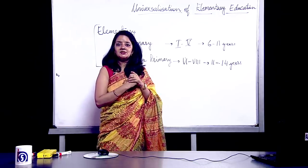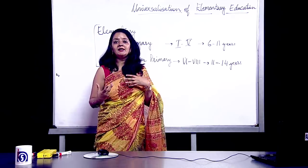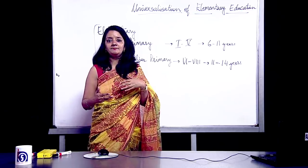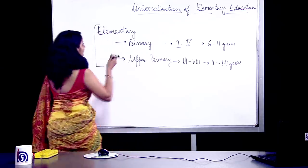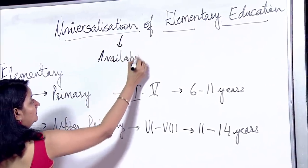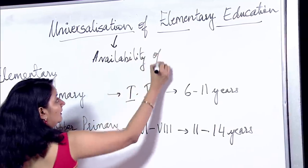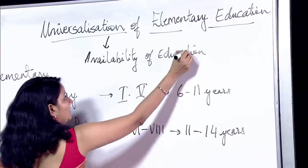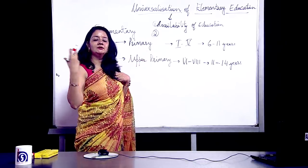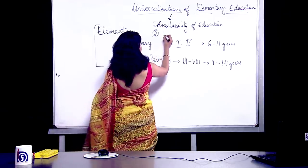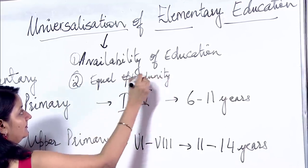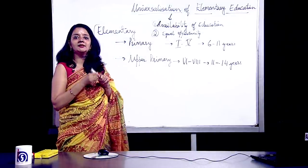The second thing under universalization of education is that it can also be defined as the availability and equal opportunity to everyone so that they can educate themselves. So there are two things under universalization of education: the first one is availability of education, and the second is that this availability is as per the equal opportunity given to everyone — availability of education and giving equal opportunity.